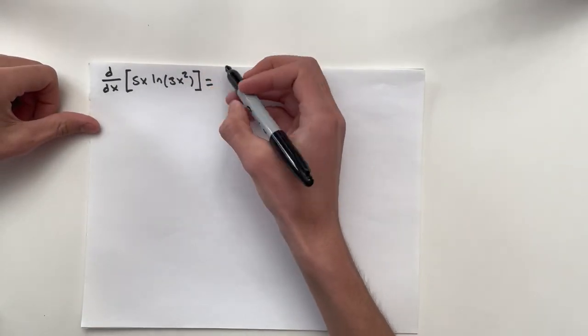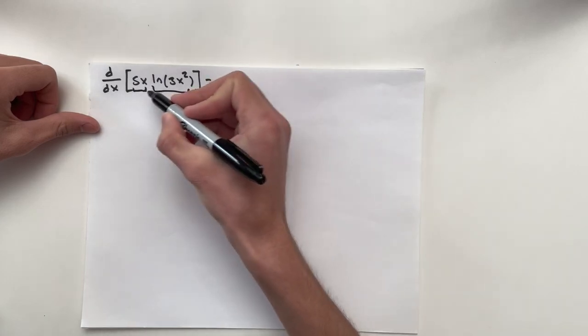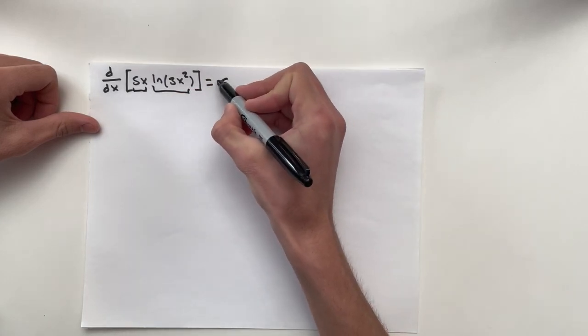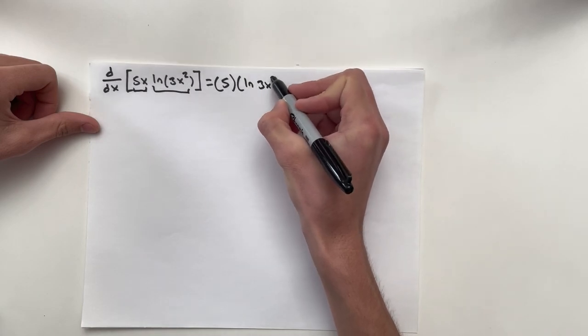Right away, I'm going to differentiate the first part. The derivative of 5x is simply 5 multiplied by natural log 3x squared.